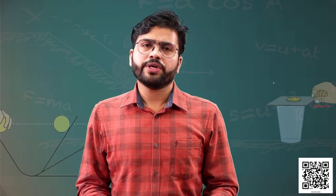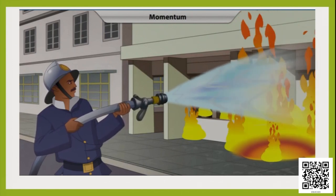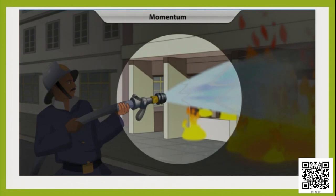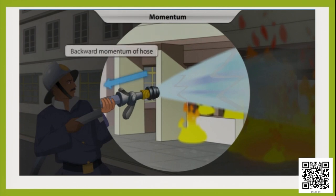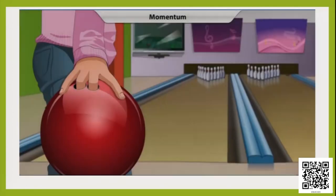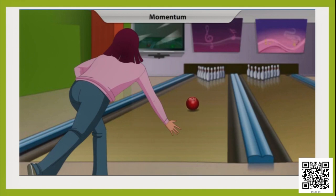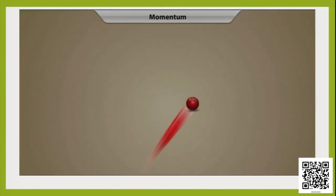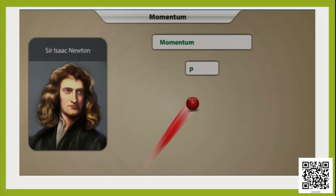Have you ever wondered why it is so difficult for firefighters to manage a hose when water spews out in full force? It's because of the large backward momentum of the hose caused by the forward momentum of the water. Sir Isaac Newton defined momentum p of an object as the product of its mass m and its velocity v.